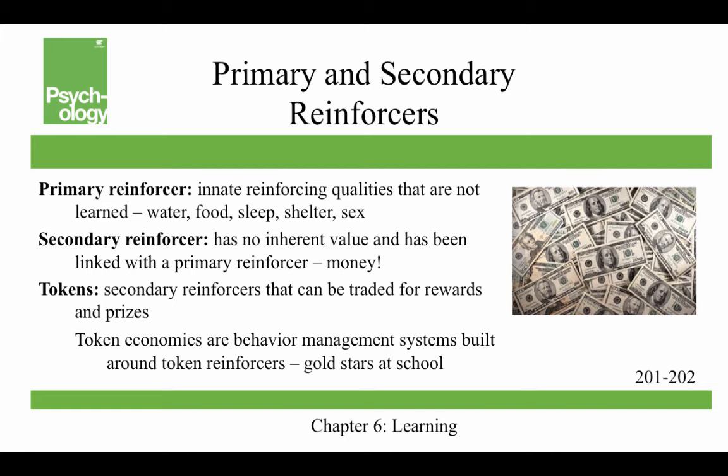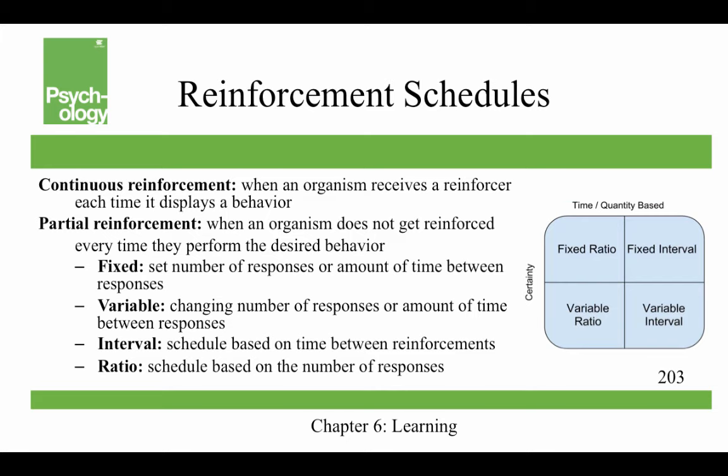A primary reinforcer has innate reinforcing qualities that you don't have to teach people — things like food, water, sleep, shelter, and sex. A secondary reinforcer has no inherent value but has been linked with the primary reinforcer — something like money, which allows you to get things like water and food. Tokens are secondary reinforcers that can be traded for rewards and prizes, and entire behavior management systems are built on token economies where people exchange tokens for privileges. Analogously, children are given gold stars at school and get excited about completing things.